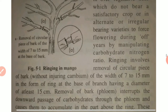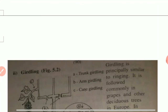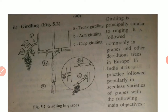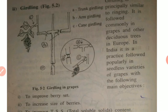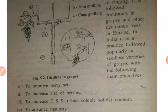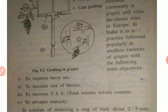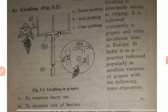After ringing, we have a second special practice that is girdling. Girdling is principally similar to ringing. It is followed commonly in grapes and other deciduous trees — deciduous trees being those which shed their leaves. In India, it is a practice followed popularly in seedless varieties of grapes. The objectives behind girdling are: to improve berry set, to increase size of berries, to increase TSS (total soluble solids content), and to advance the maturity of fruits.